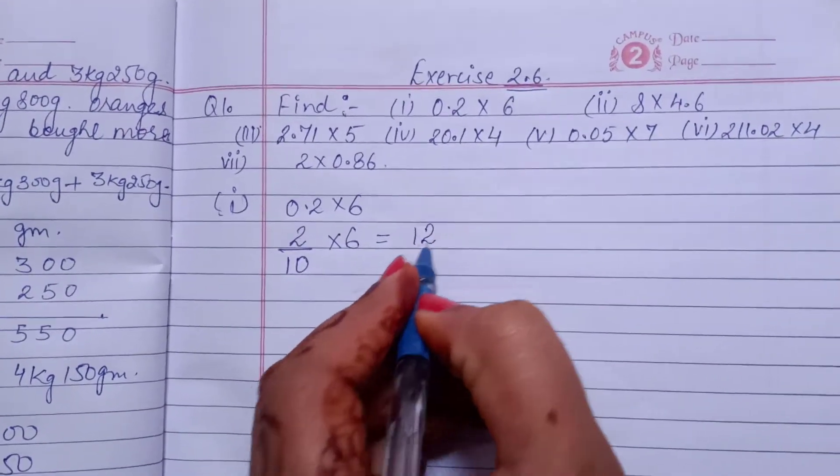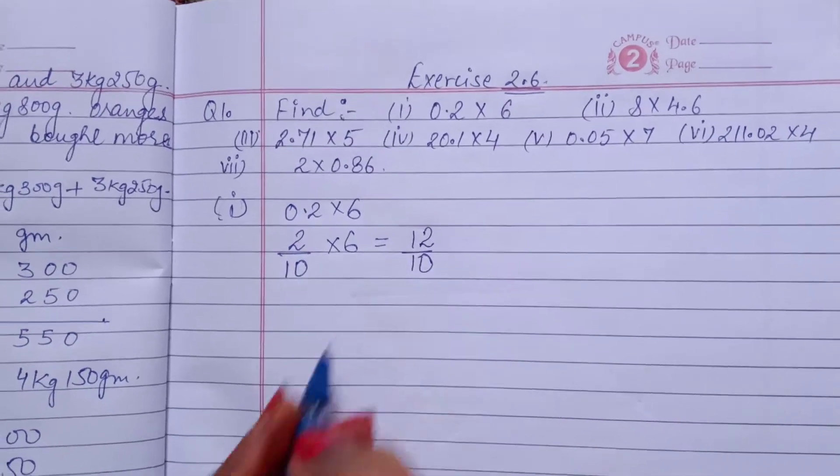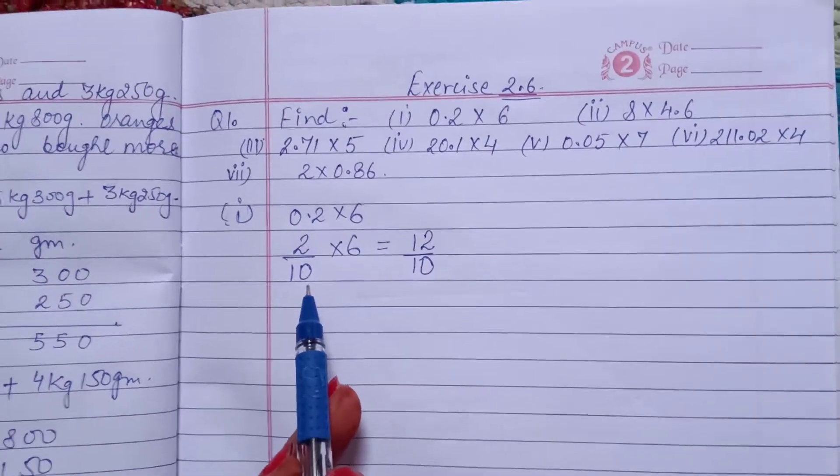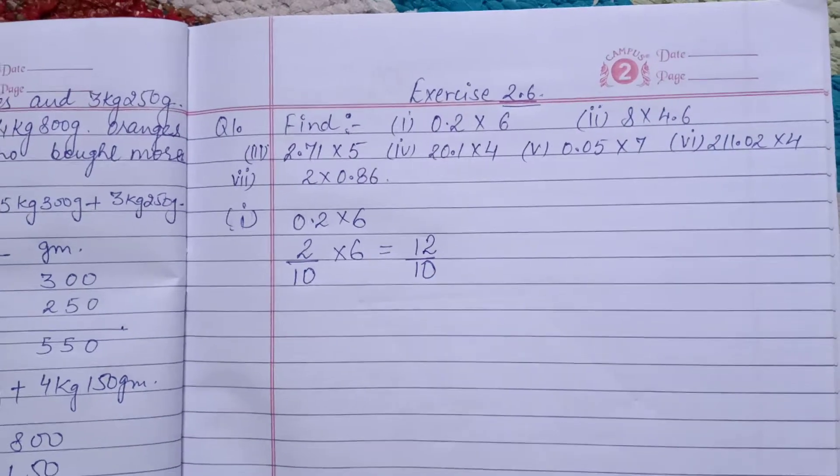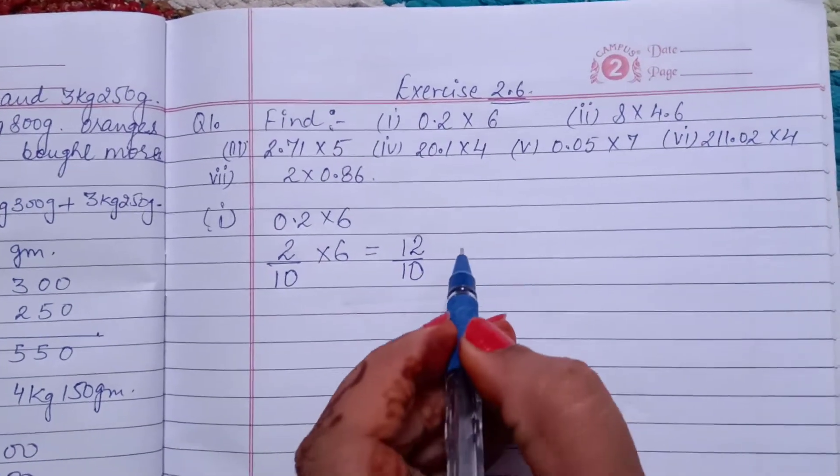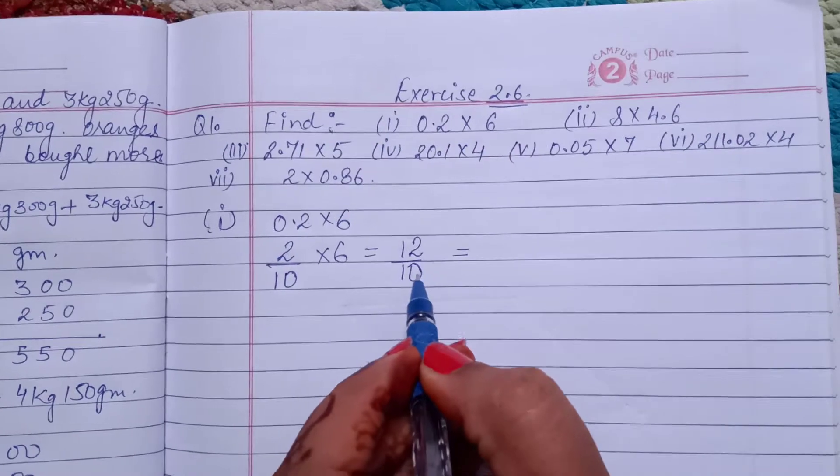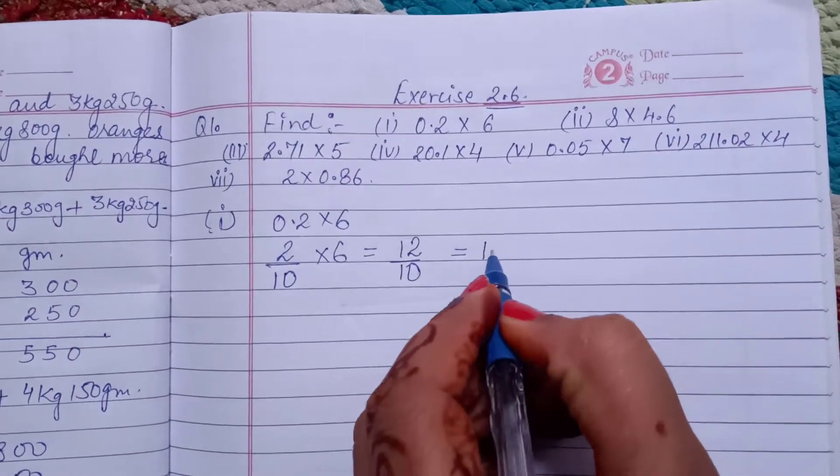Then 2, 6, the 12, 12 over 10. We know if we want to remove this over and convert into decimal form, after one digit, because here 10, after one digit put decimal.